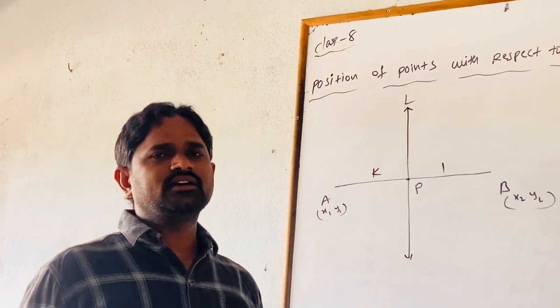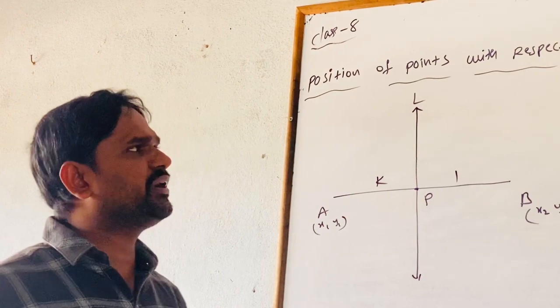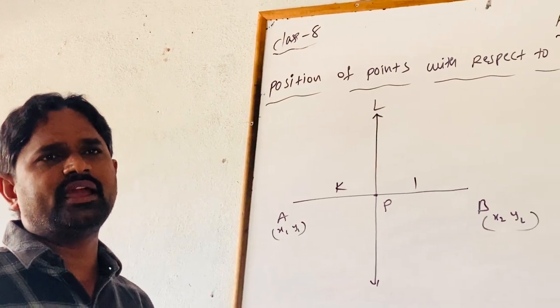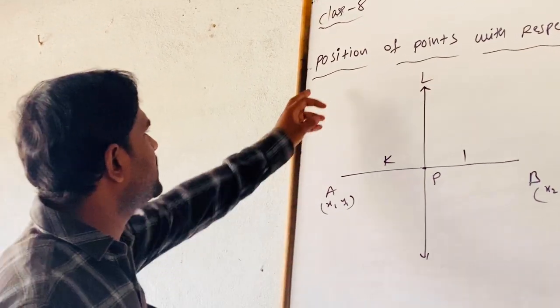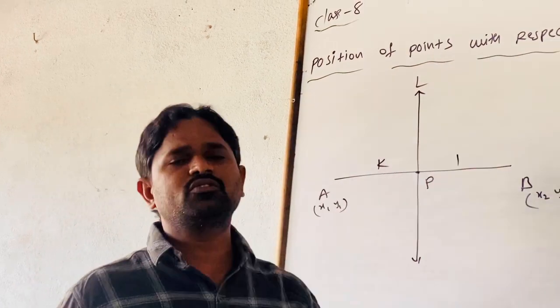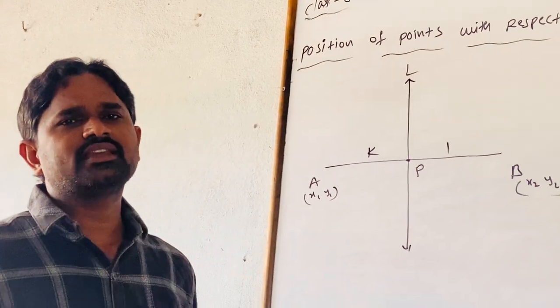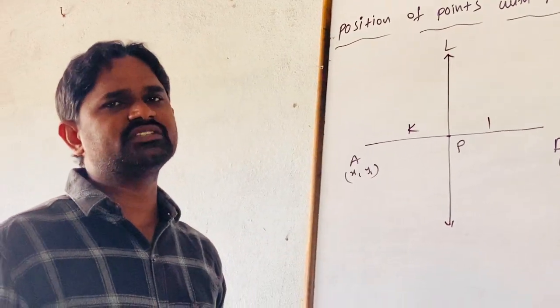In previous class, we derived symmetric form and parametric form of a line. The next topic is the position of points with respect to the line—where the points lie with respect to a line which is in standard form.